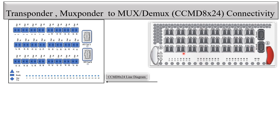Using the CCMD8 Cross 24 card, we can add and drop 24 lambdas, and 8 directions can be used via this card. Physically, this is how the card looks.